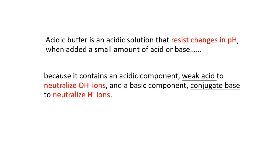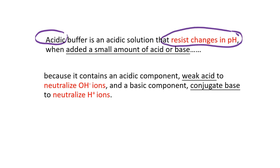As a summary, an acidic buffer is a solution that resists pH changes when a small amount of acid or base is added. This is because it has two components — one acidic and one basic — which react with all the hydroxide ions and hydrogen ions added to the solution.